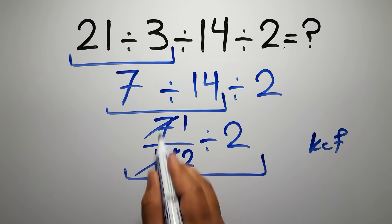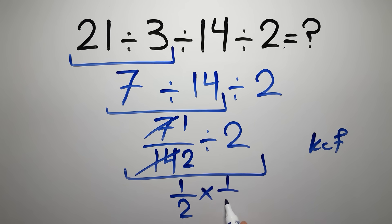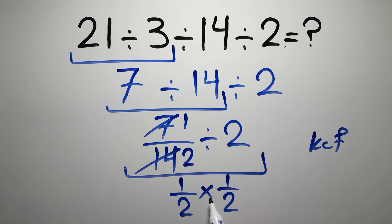We can write, keep the first fraction, change the division to multiplication, and flip the second fraction. So we have 1 over 2 times 1 over 2, which equals 1 over 2 times 2, which equals 4, 1 over 4.